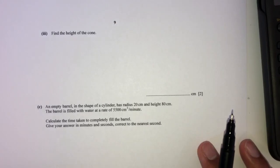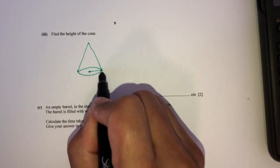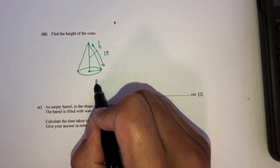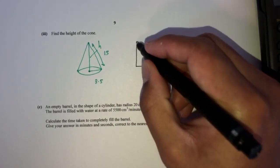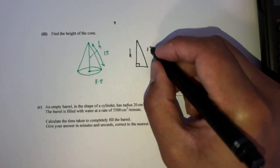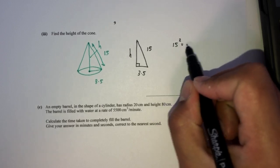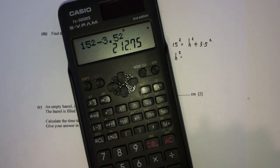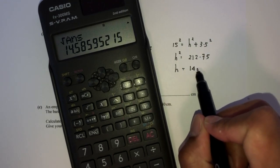For part three: find the height of the cone. We have slant height 15 cm and radius 3.5 cm. By Pythagoras' theorem: 15² equals h² plus 3.5², so h² equals 15² minus 3.5² equals 225 minus 12.25 equals 212.75. The height h equals the square root of 212.75, which is 14.6 cm correct to 3 significant figures.